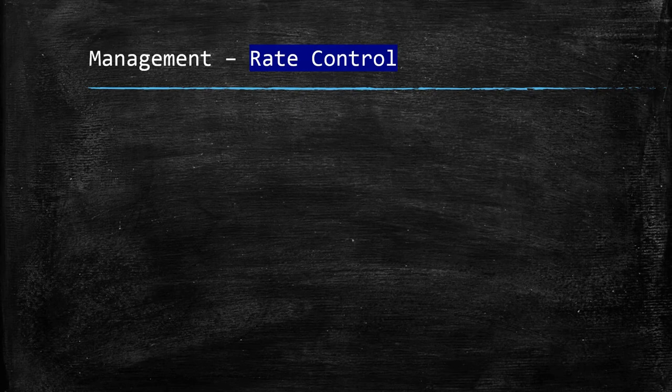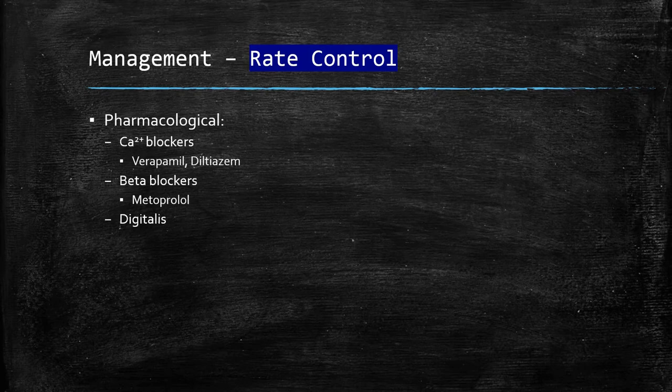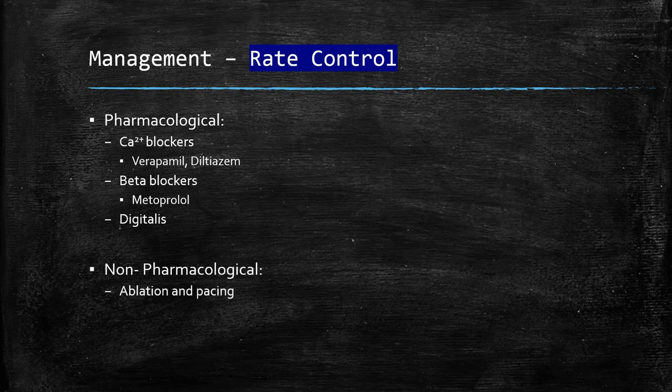Rate control strategy accepts the presence of AF and aims to control ventricular rate and the degree of irregularity despite continuing fibrillation within the atria. This is split into pharmacological modalities such as calcium channel blockers — verapamil, diltiazem — beta blockers such as metoprolol, and digitalis. Non-pharmacological techniques include ablation and pacing.